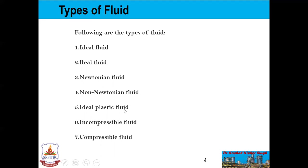When the shear stress is proportional to the velocity gradient and shear stress is more than the yield value, it is known as an ideal plastic fluid. When the density of a fluid does not change with the application of external force, it is known as an incompressible fluid. When the density of the fluid changes with the application of external force, it is known as a compressible fluid.